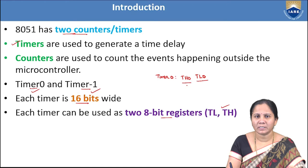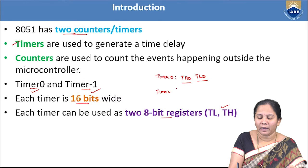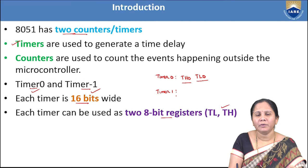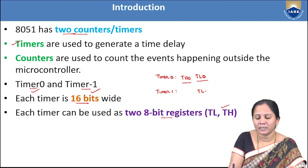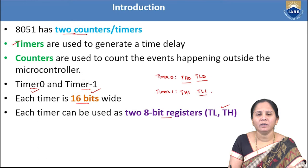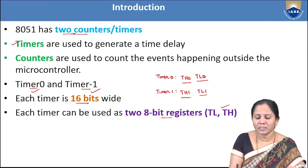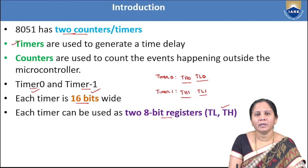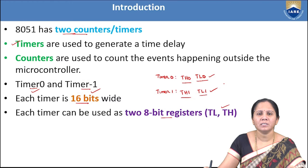Similarly, Timer 1 is also a 16-bit register. It can be represented as two 8-bit registers: TL1, which holds the lower order 8 bits, and TH1, which holds the higher order 8 bits. We can represent the two 16-bit timers as 8-bit registers using TL and TH.